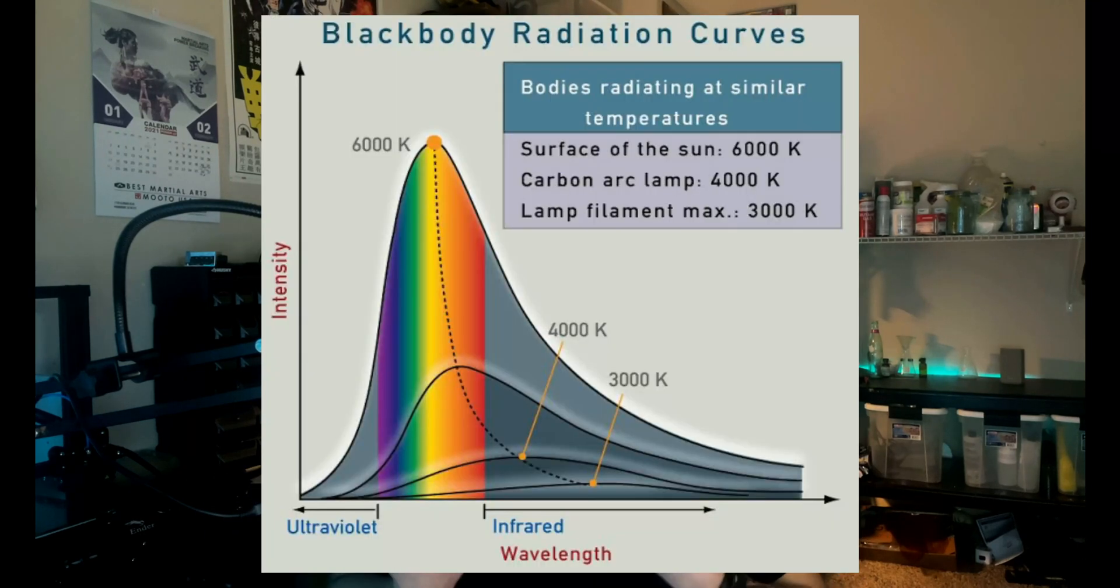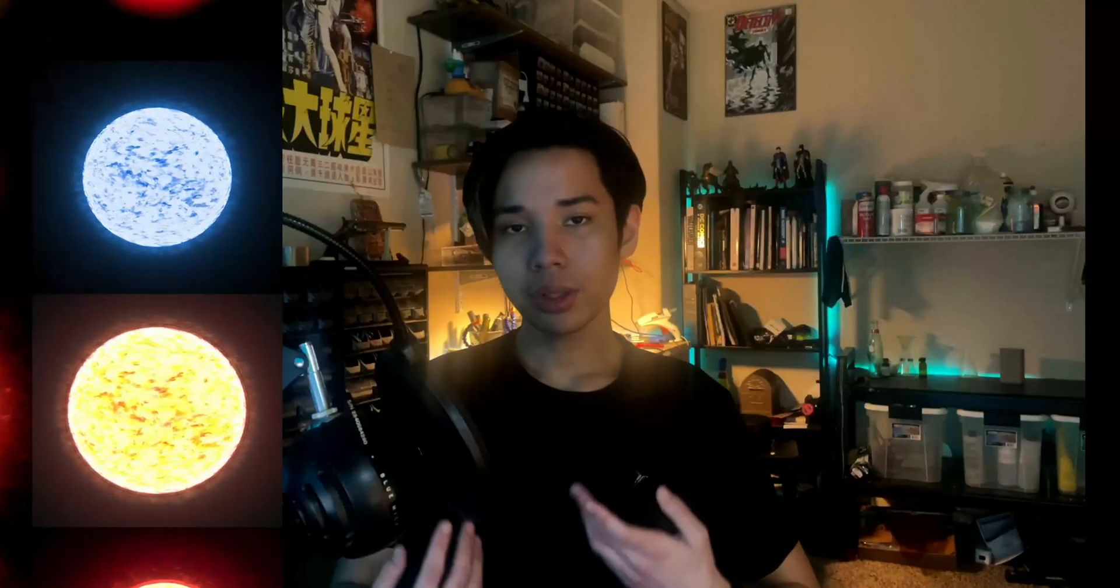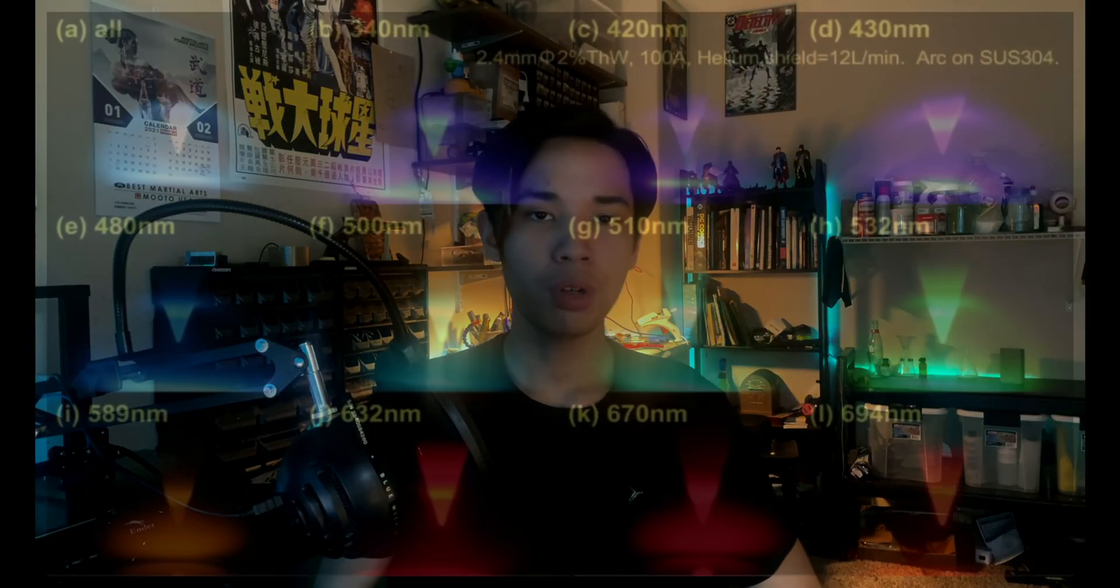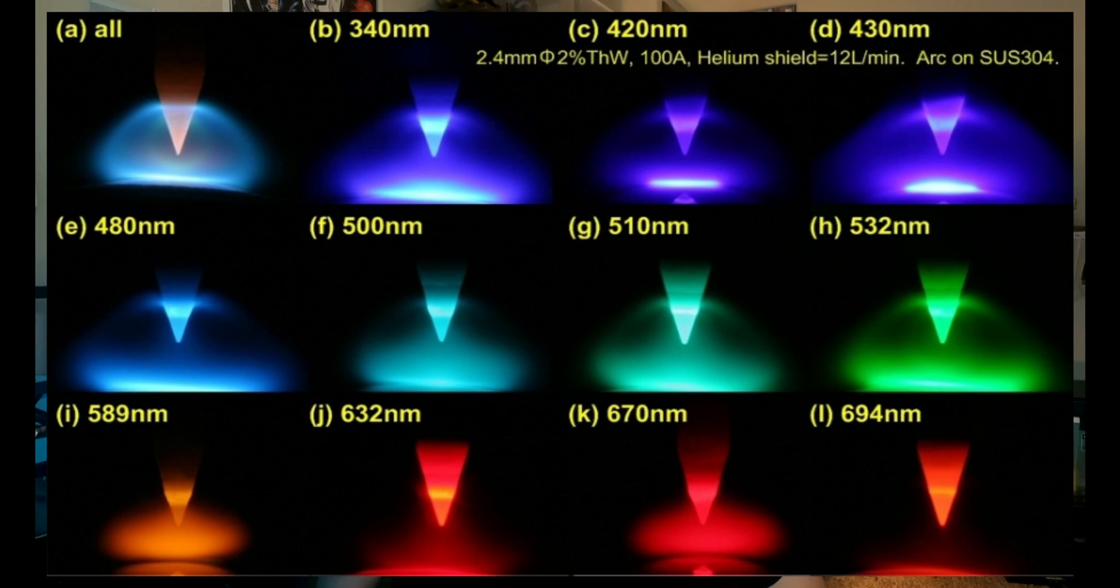Plasma also comes in various colors, typically dependent on how hot the plasma is. We often observe this in stars in our universe. However, the color can also be dependent on the chemical properties of the ionized matter. Now, in order to demonstrate this concept, I'm first going to build a high voltage circuit so that I can make some plasma.